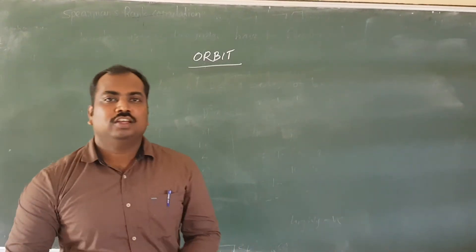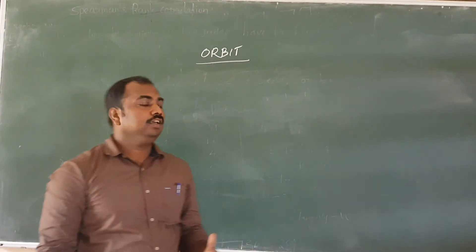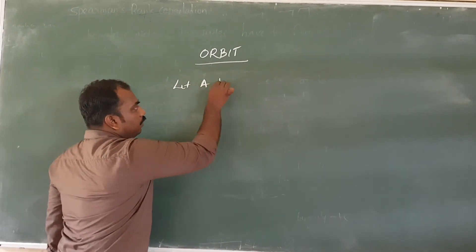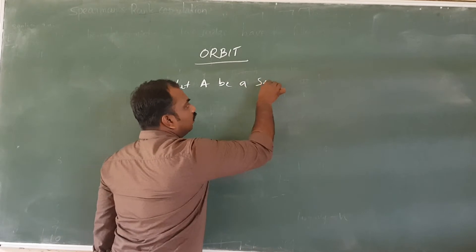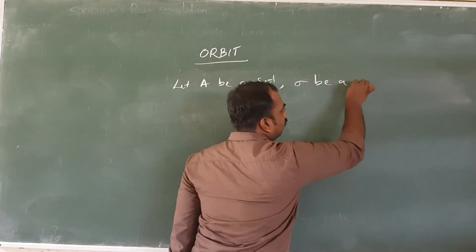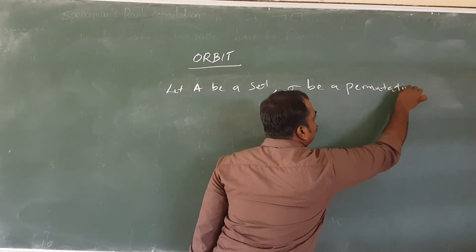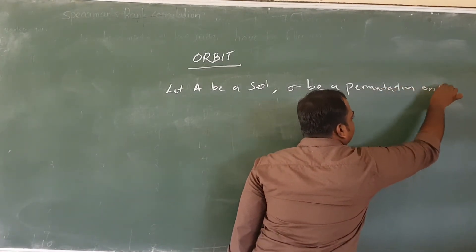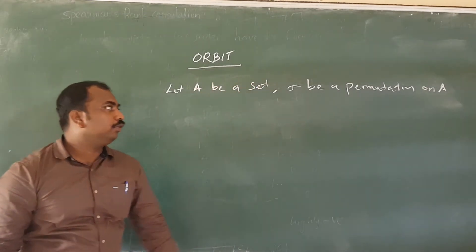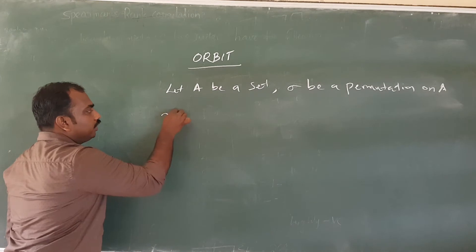In this video, we are going to talk about the orbit environment. For the orbit environment, let A be a set and sigma be a permutation on it. A is another set, sigma is another permutation on it. Now, let's cover the relational permutation on it.